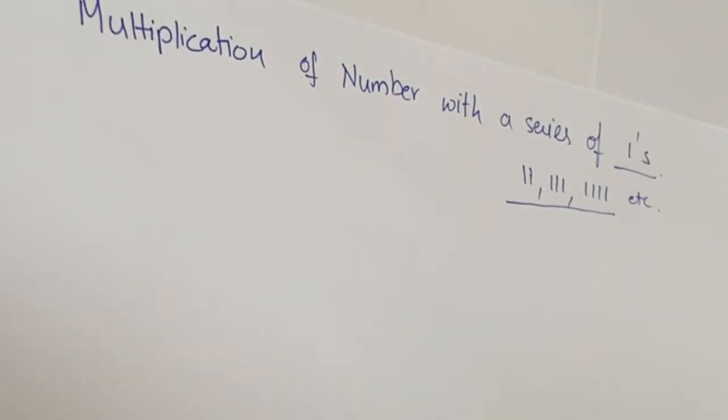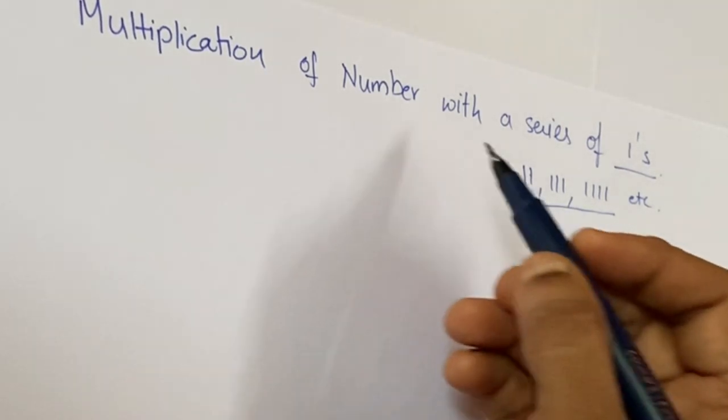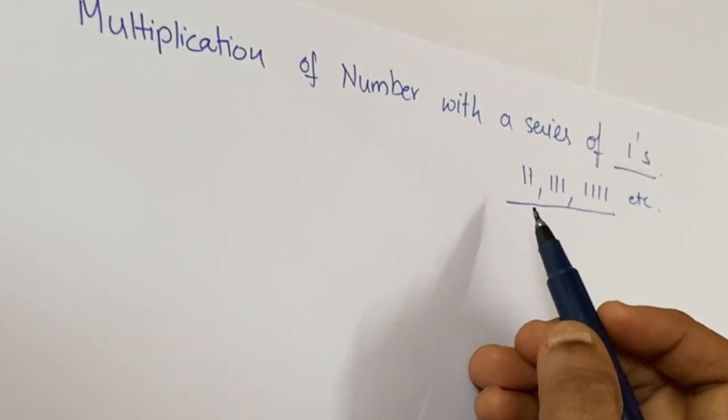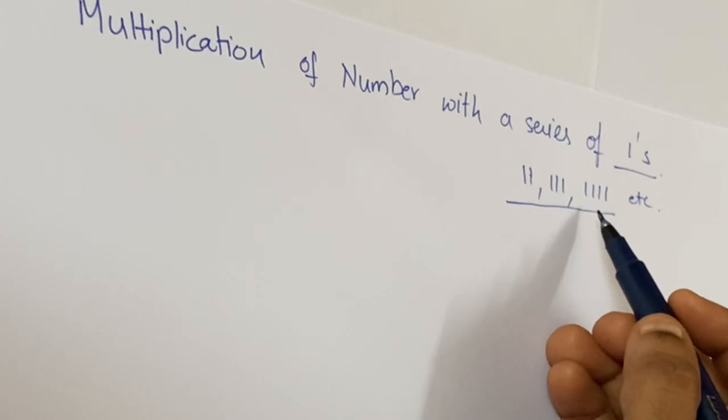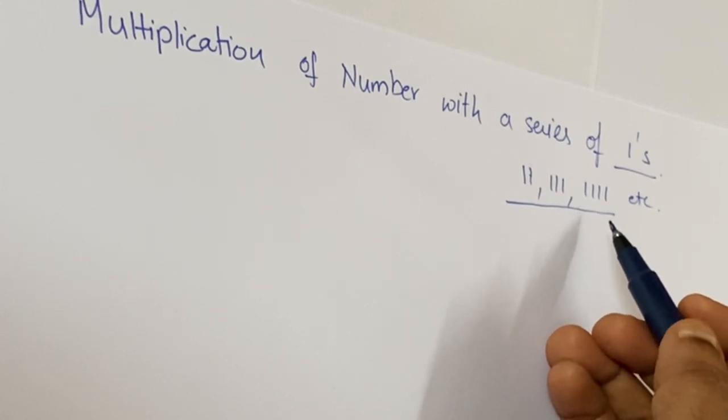Welcome! In our previous video we learned about multiplication of numbers with a series of nines. Now we learn about multiplication of a number with a series of ones—that is 11, triple one, and four ones.